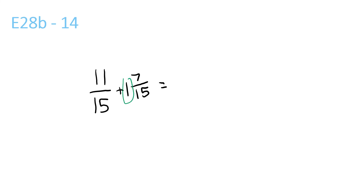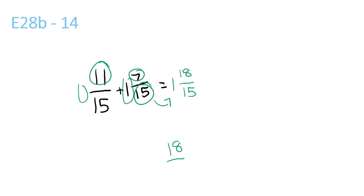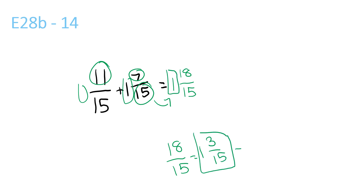So 1 plus nothing is just 1. Then 11 plus 7 is 18. Bring the 15 over: 1 and 18 over 15. Now 18 over 15 is equal to 1 and 3 over 15. We need to add the 1 in front, so it would be 2 and 3 over 15.